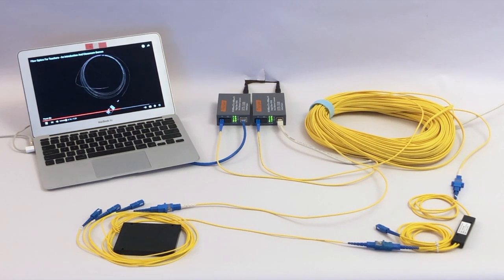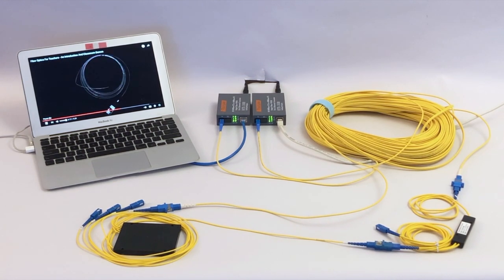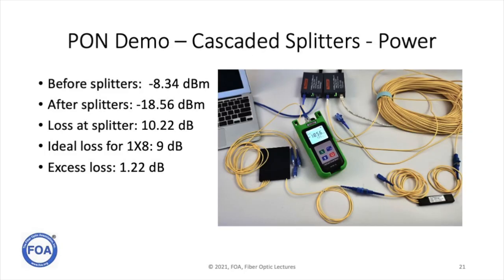It will actually work at a split ratio of 32 and maybe even 64. A lot of what determines how many splits you can handle is how long the link is and how much loss you have in the fiber, so the key is to always do some testing on your link. When we test our 1x8 PON link, we find it has a loss of 10.22 dB, and each port varied only by a couple of tenths of a dB.